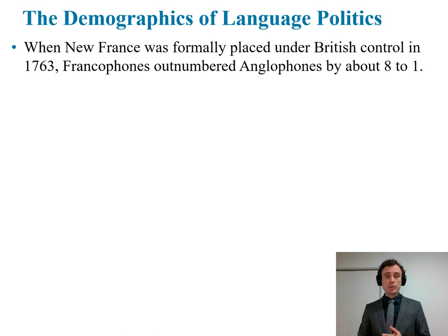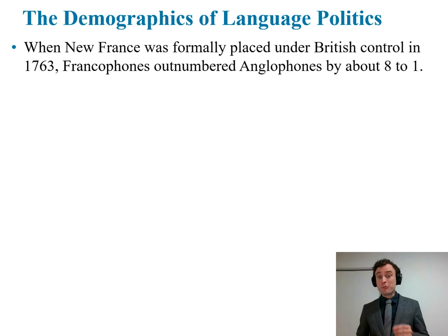Let's proceed to our first learning objective: to describe the current and historical trends in the demographics of language politics, specifically the size and concentration of francophone and bilingual speakers in Canada. We begin with the conquest of 1759 and the end of the Seven Years' War in 1763, when francophones outnumbered anglophones by about eight to one. Despite this numerical advantage, francophones were about to begin two centuries of domination by an anglophone minority.